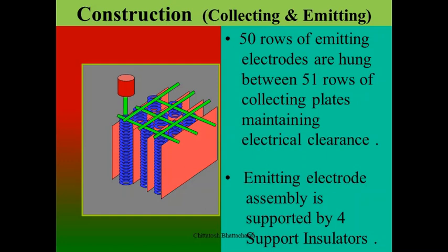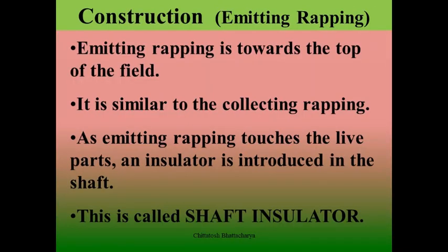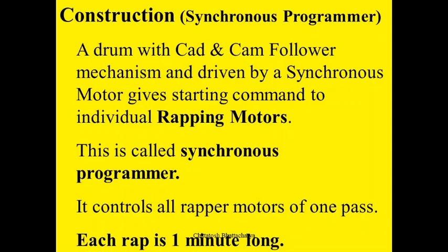Each helix is 4.5 meters long; one column consists of three such helixes vertically connected, and each row has sixteen such columns, with 50 rows. These 50 rows of emitting electrodes are hung between 51 rows of collecting plates, maintaining the required electrical clearance. The emitting electrode assembly is supported by four support insulators, and there is a wrapping arrangement fitted with hammers placed across the collecting plates, mounted at different angles to wrap at different times, maintaining a wrapping sequence by rotating a connected shaft.